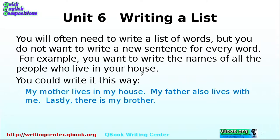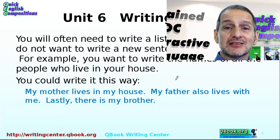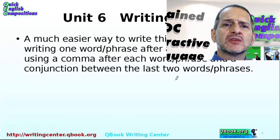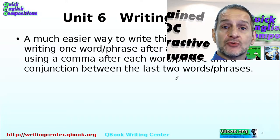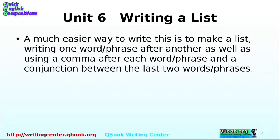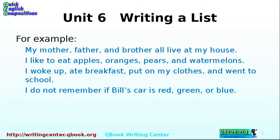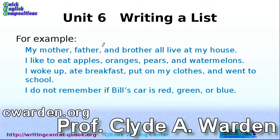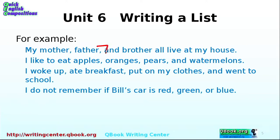Let's look at another example. Here are three sentences expressing a basic idea: 'My mother lives in my house. My father also lives with me. Lastly, there is my brother.' The problem is that takes up a lot of space for a very basic idea. A better way is to combine them: 'My mother, father, and brother all live at my house.' Notice the comma before 'and brother.' That makes it much easier to read and saves space.